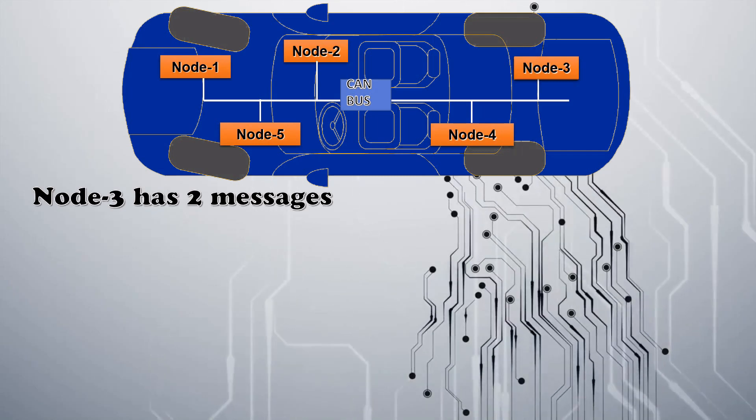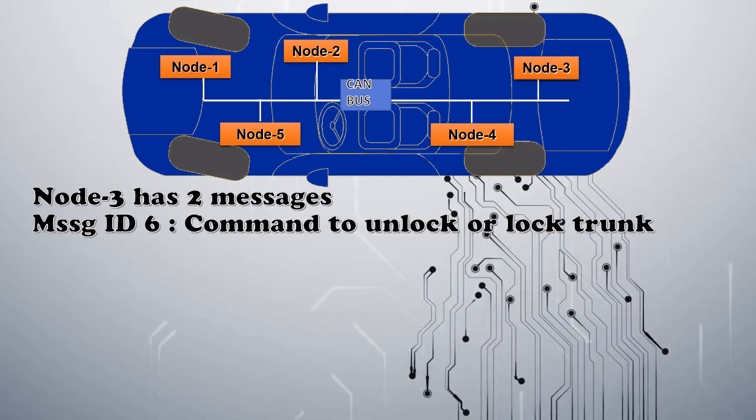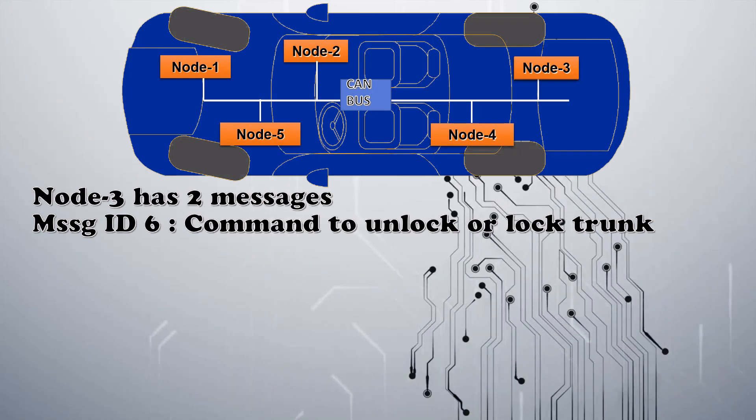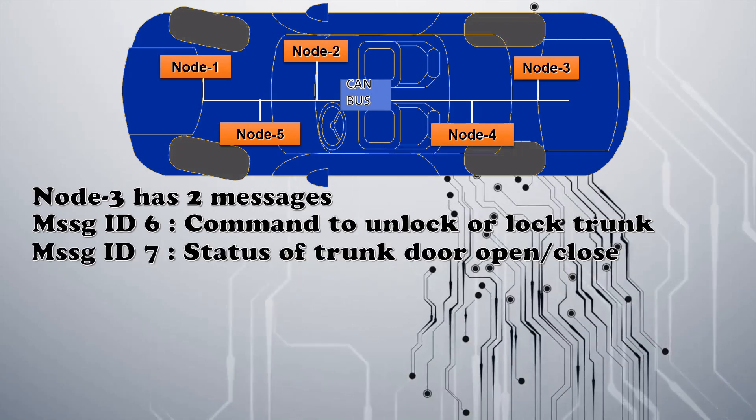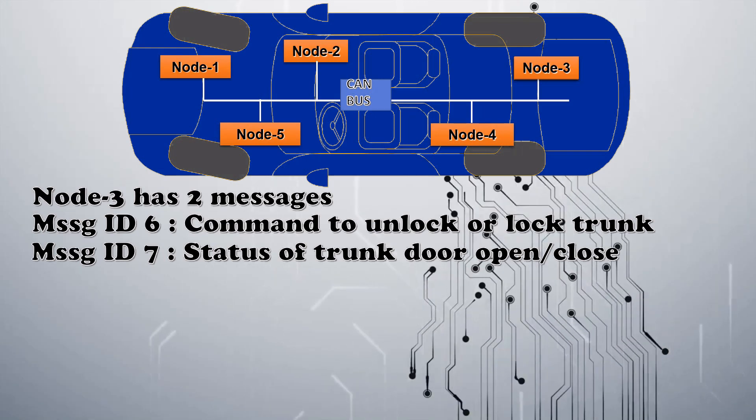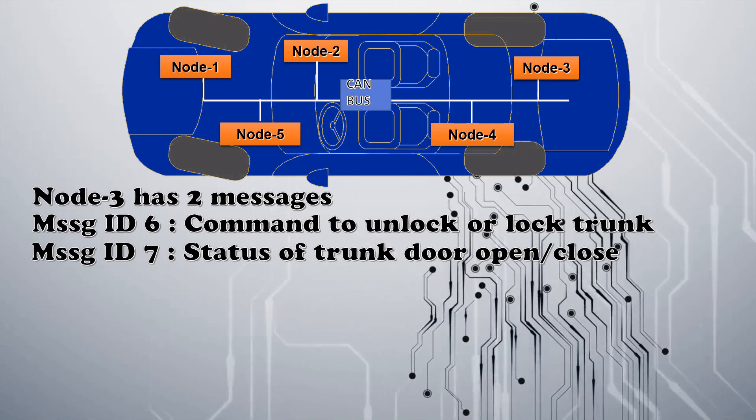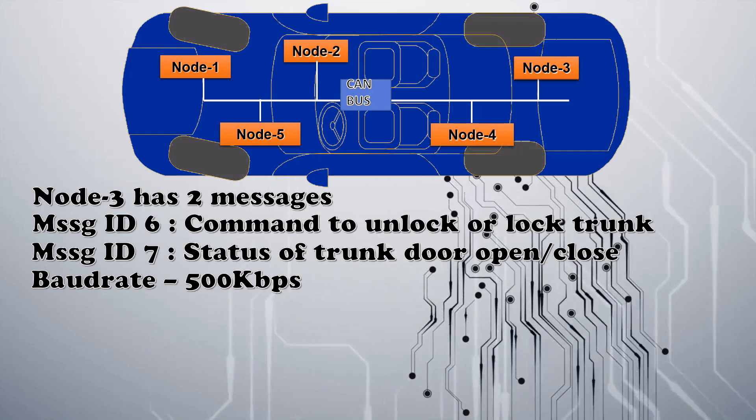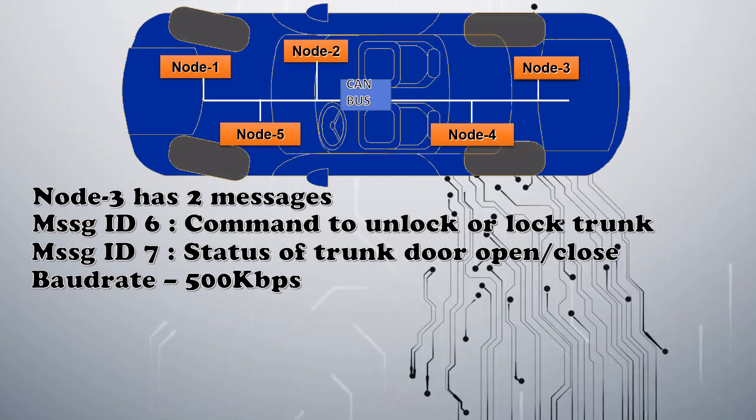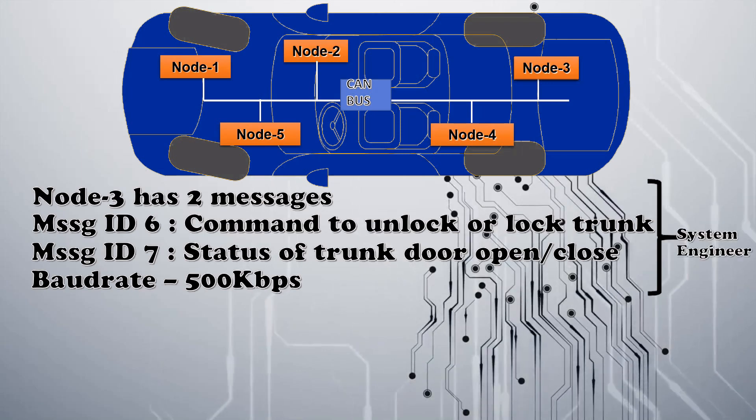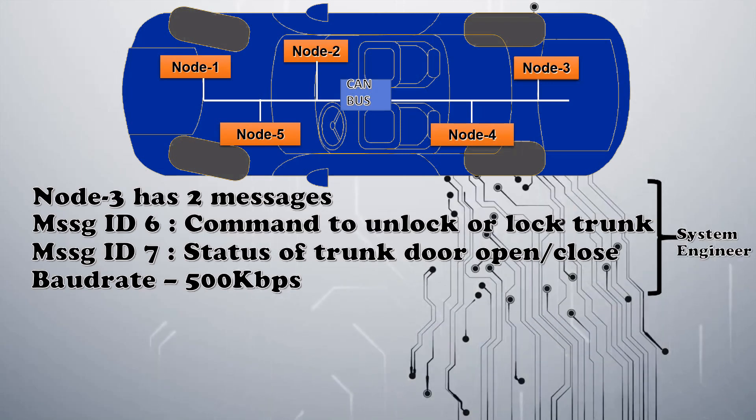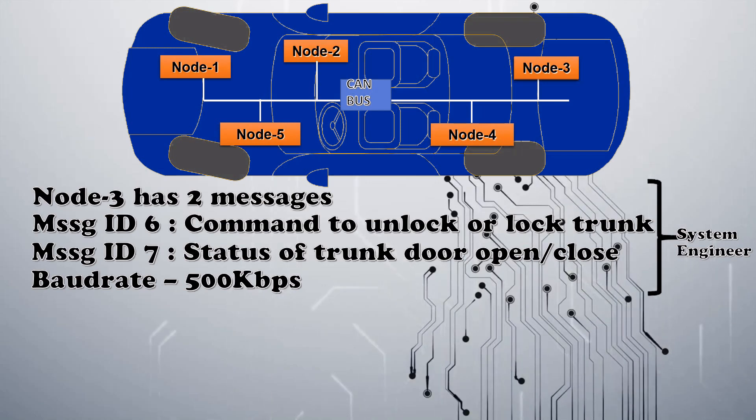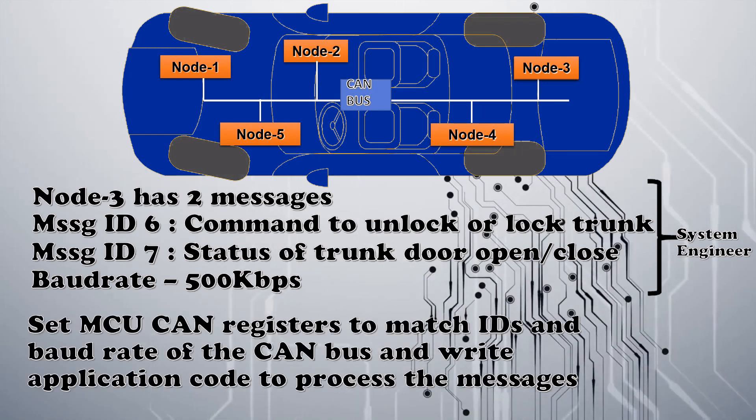Message ID 6 is command to unlock or lock trunk. Message ID 7 is status of trunk door open or close. The baud rate is 500 Kbps. And this work will be done by the system engineer.